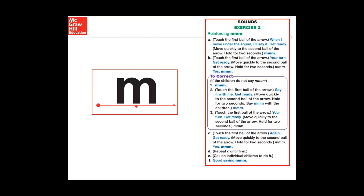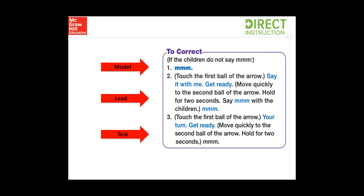Sometimes in your presentation book, like in this example from level K, the correction procedure will be right in the presentation book — you'll see a box that says 'to correct.' This allows you as a teacher to know exactly how to fix it using the specific correction procedure. The model is giving the sound, the lead is saying it with the teacher, and the test is saying it by themselves. You'll automatically go back on the delayed test to give students the opportunity to fix their error. This is a great teaching technique because it's not only correcting students, but providing positive feedback on how to make them better.